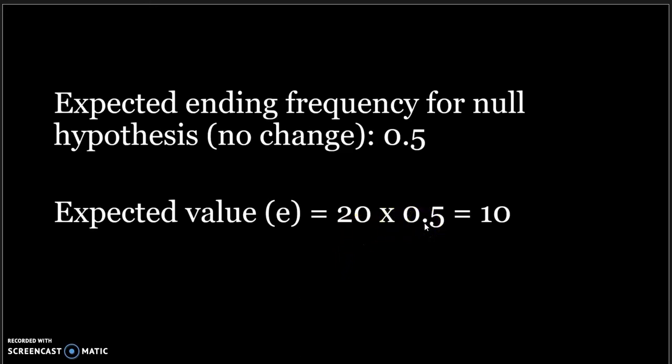So in this case, we have 20 alleles, multiply that by 0.5, and that is 10 alleles. So the expected value is 10 alleles for both the red and blue alleles.